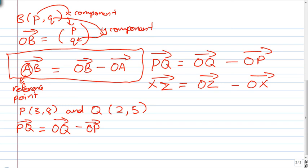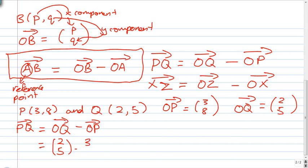You know that OP can be represented as 3,8 as a column vector, and OQ can be represented as a column vector 2,5. That being said, we now know what OQ is: 2,5 minus OP which is 3,8. So 2 minus 3 is minus 1, 5 minus 8 is negative 3. So PQ as a column vector can be represented as negative 1, negative 3 written vertically in brackets.